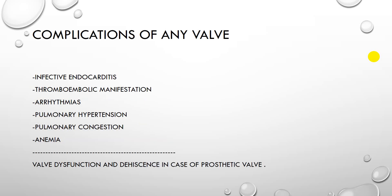The complications of any valve — even VSD — include: infective endocarditis, thromboembolic manifestations, arrhythmia, pulmonary hypertension, pulmonary congestion, and anemia. In the case of prosthetic valve disease, you may additionally include valvular dysfunction and dehiscence.